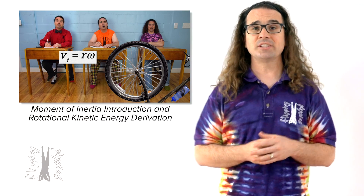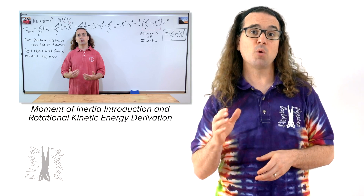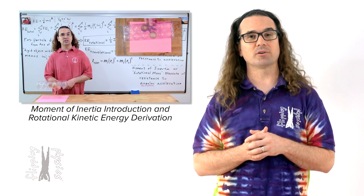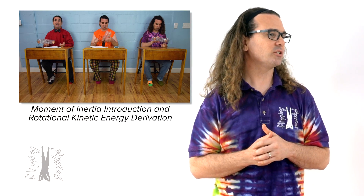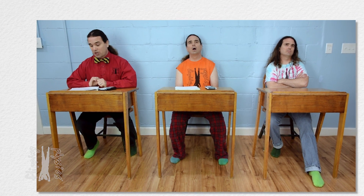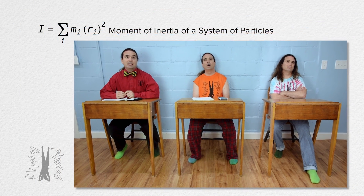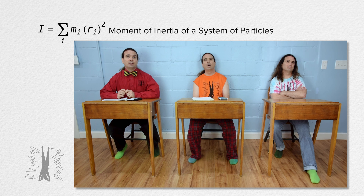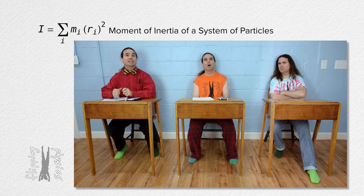Good morning. We have already derived the equation for the moment of inertia of a system of particles. The moment of inertia of a system of particles equals the sum, for every particle in the system, of the mass of each particle times the square of r — the distance each particle is from the axis of rotation.